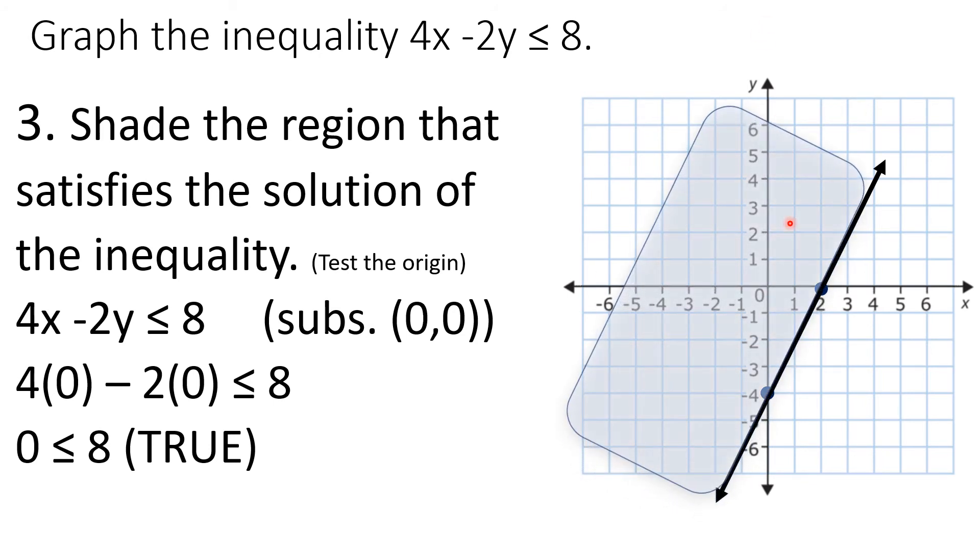So here you will now shade. Put the shade here. Shade here because when you test the origin, it's true. What if the origin 0, 0 is false? Then you shade below instead.